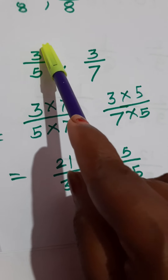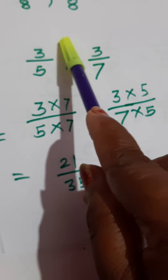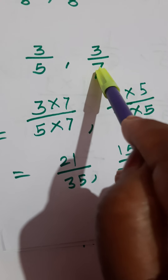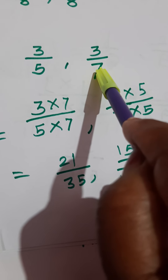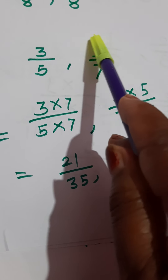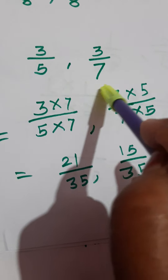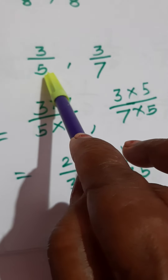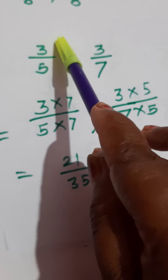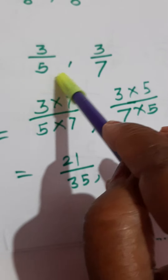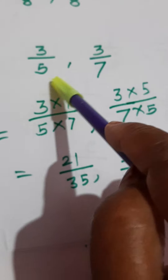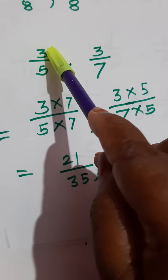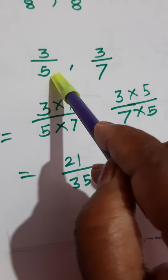Multiply the first fraction by the second denominator, and multiply the second fraction by the first denominator. Fraction means multiply both the numerator as well as the denominator.